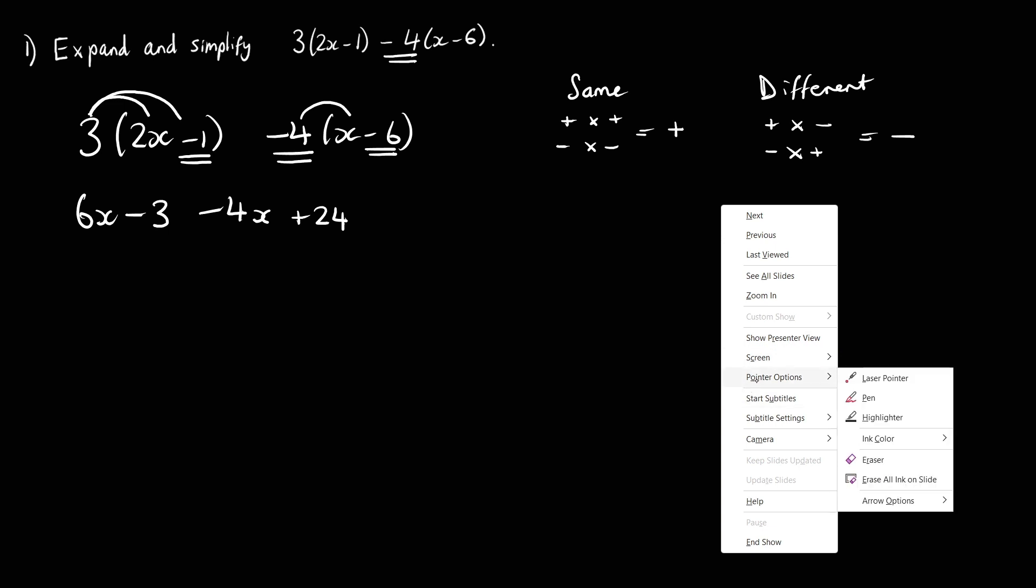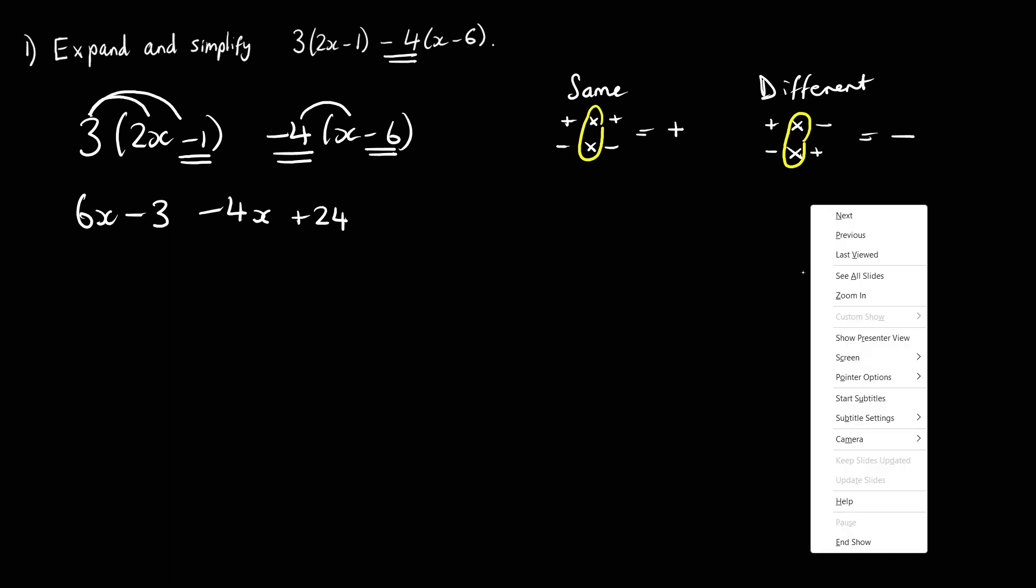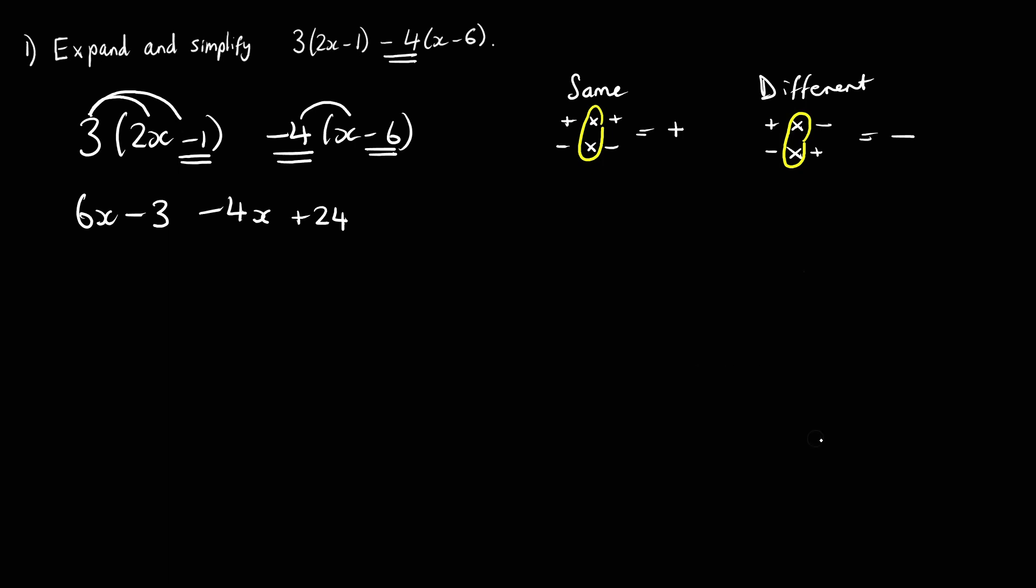Just note that these rules, however, only refer to when we're multiplying. So plus times a plus is a plus, and minus times a minus is also a plus. These rules only work when we're multiplying. It's different if you're adding or subtracting. I think you usually think about a number line and the size of the values in that case.